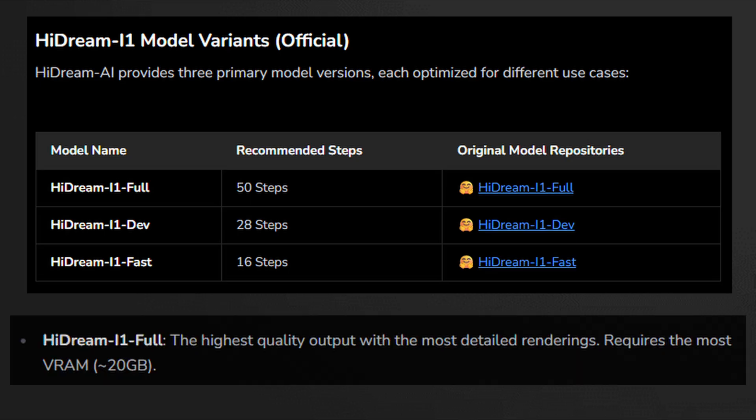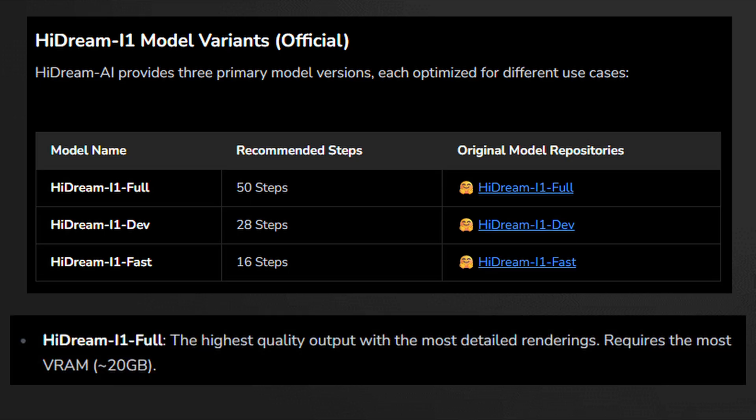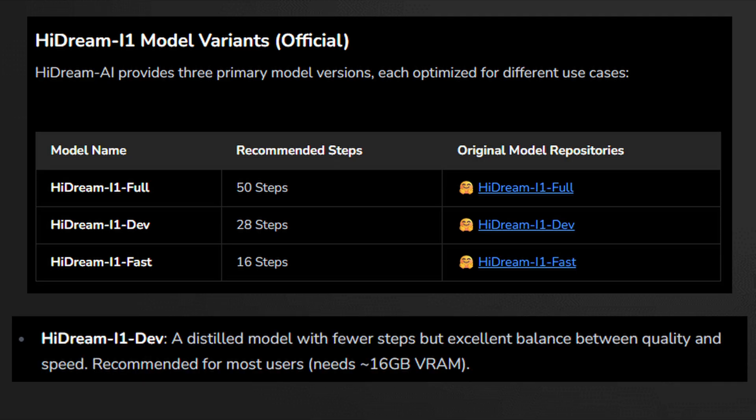Let's start with HiDream Full. This version delivers the highest possible image quality with rich detail and complex textures, but it's also the most resource intensive, requiring around 20GB of VRAM to run smoothly. Next we have HiDream Dev — the sweet spot for most users, offering an excellent balance between quality and speed, running well on setups with at least 16GB of VRAM.